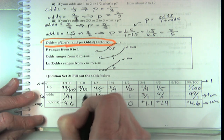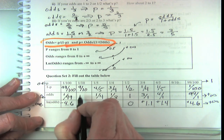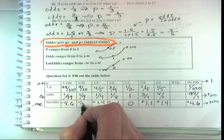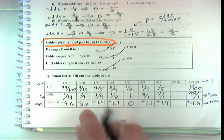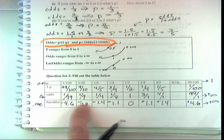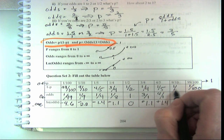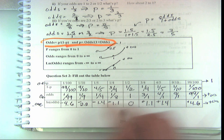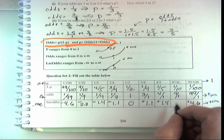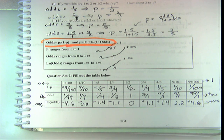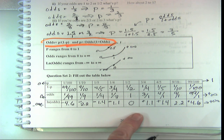For probability one-tenth: odds are 1 to 9, and the log-odds is negative 2.2 — you have to do this on your calculator. For probability nine-tenths: odds are 9 to 1, and log-odds is positive 2.2. It's symmetrical once you know one side.